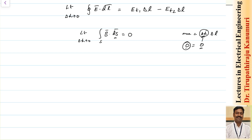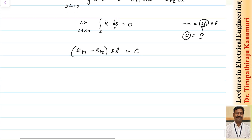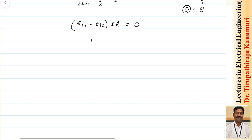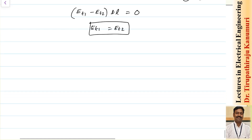Combining both sides, we get Et1 minus Et2 multiplied by delta l equal to 0, which gives us Et1 equal to Et2. This is the first boundary condition.